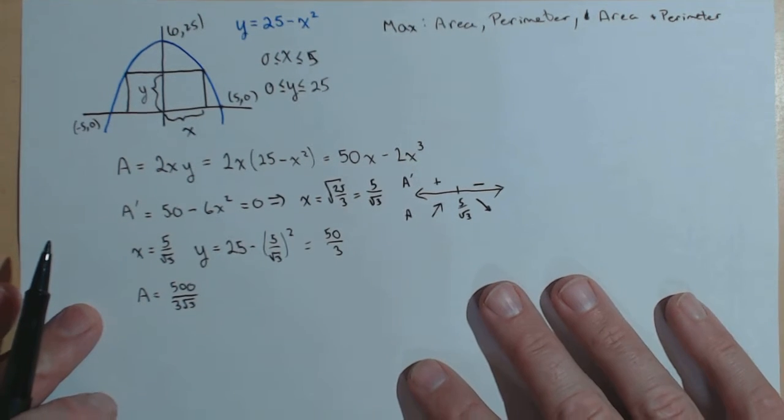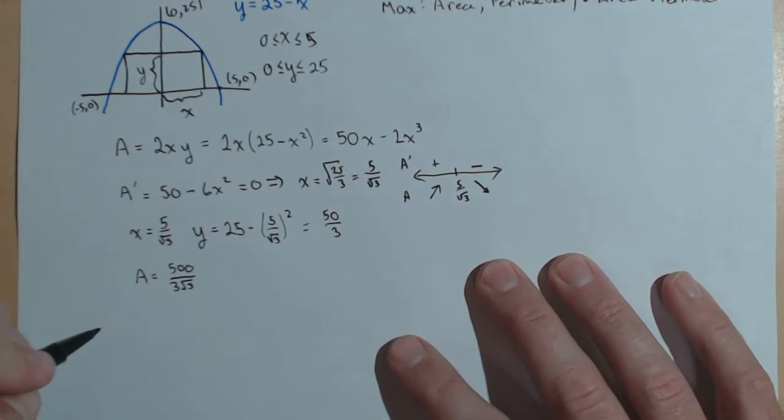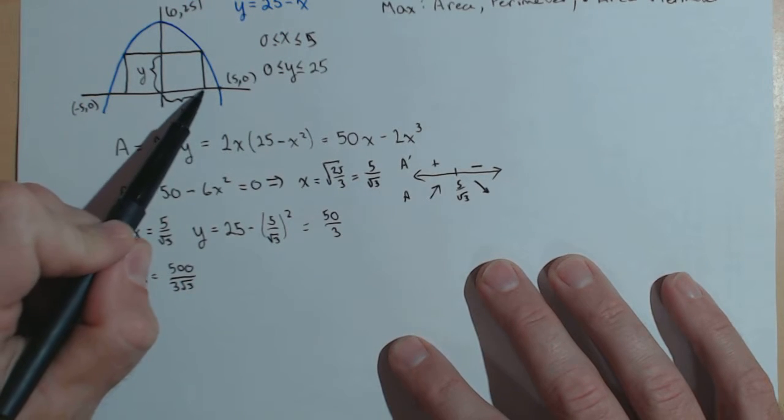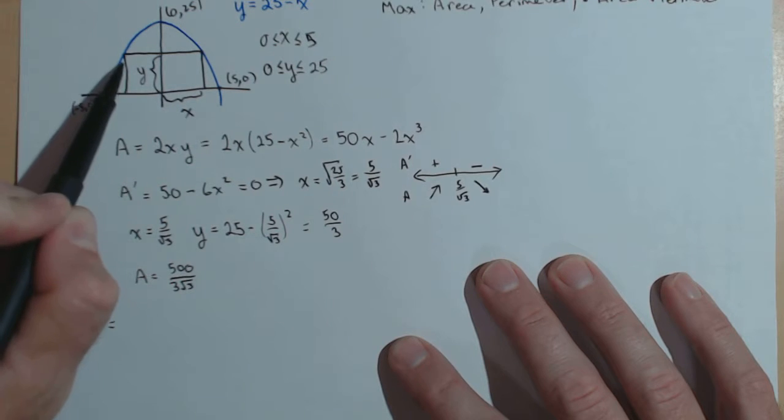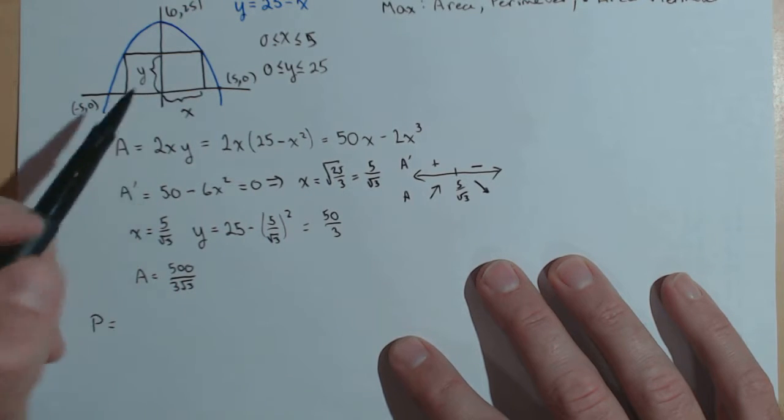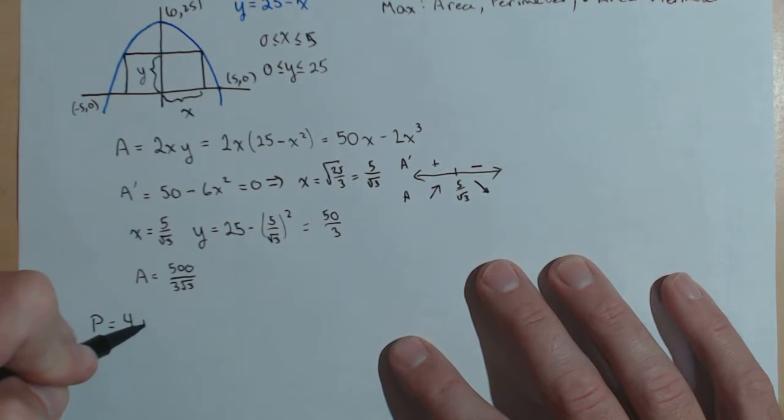Let's go ahead and move on to perimeter. Now the perimeter, based on the way we have this written, we have an x plus an x plus a y plus an x plus an x plus a y. So 4x plus 2y.